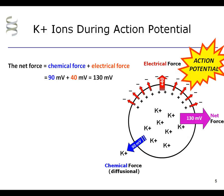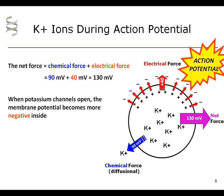During an action potential, the net force on potassium is always outward, because the chemical force is always greater in magnitude than the electrical force. Thus, when potassium channels open, the membrane potential becomes more negative, which tends to prevent action potentials or to repolarize the membrane and end action potentials already in progress. When potassium channels open, they reduce excitability, which is why potassium channel activity is considered a brake on electrical excitability. By contrast, drugs that block potassium channels tend to make cells more electrically active.